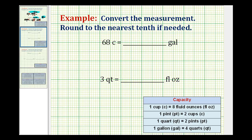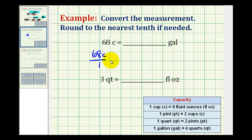We want to make the following conversions using the American or standard measurement system. In the first example, we want to convert sixty-eight cups into gallons using the conversions below, and we're going to do this by using unit fractions. So we'll start by putting sixty-eight cups in fraction form — sixty-eight cups over one.